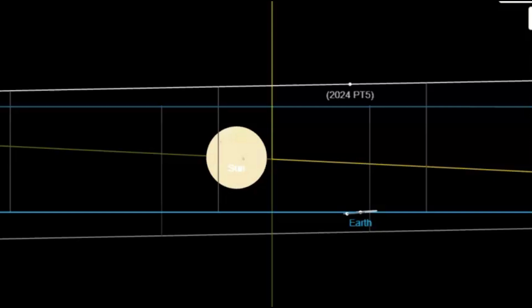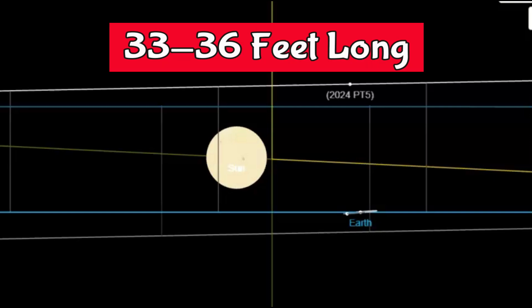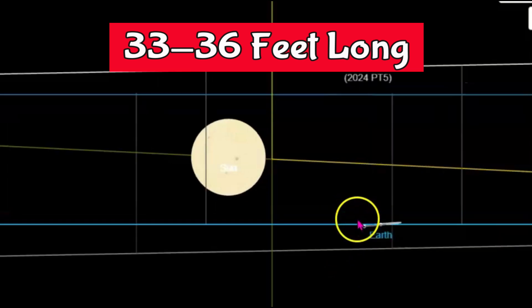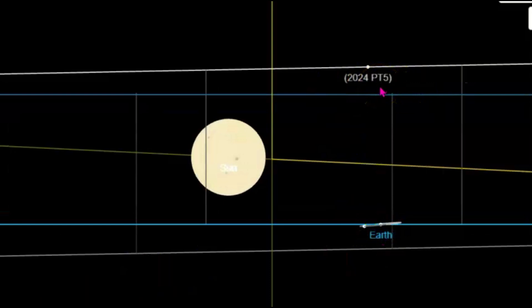It's only about 33 to 36 feet across or in length. And here on JPL, you can see the Earth and then our moon in the path of 2024 PT5. This asteroid was discovered on August 7 using the NASA funded asteroid terrestrial impact last alert system. I like that last alert system, or Atlas.